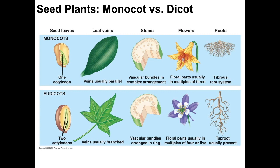Finally, we can look at the difference between the roots. Monocots tend to have fibrous roots, meaning many small branches going out in many different directions. Dicots tend to have what is called a tap root, where there is one long main root going down with many smaller roots branching out from there. A recognizable example of a tap root would be a carrot — that long orange carrot is actually the tap root of the carrot plant.